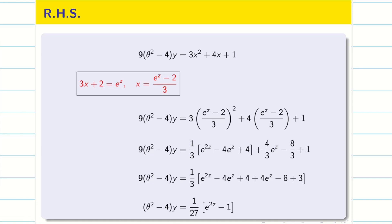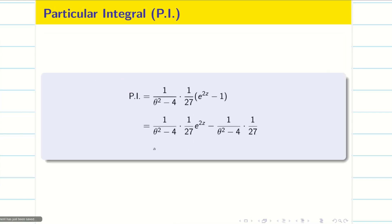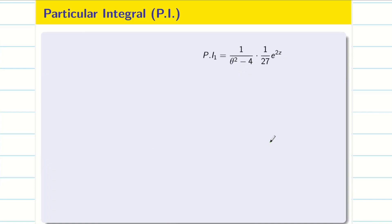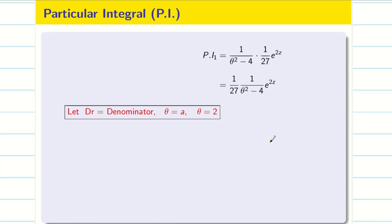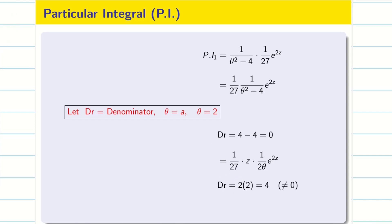We split the PI into PI1 and PI2. For PI1: using the rule with θ = a = 2, θ² = 4, and 4 − 4 = 0 (DR = 0), so multiply by z and differentiate denominator to get 1/(2θ). Applying θ = 2 gives denominator = 4 ≠ 0. Therefore PI1 = z · e^(2z) / 108. For PI2: the term has e^(0·z) = 1; with θ = 0 the denominator = 0 − 4 = −4. Combining PI1 + PI2 gives the complete PI, including the 1/108 factor.